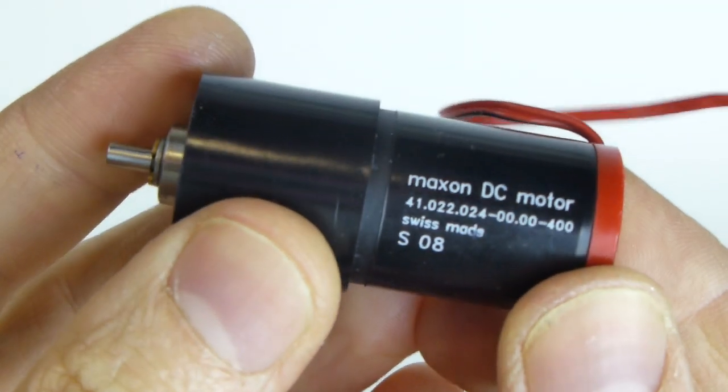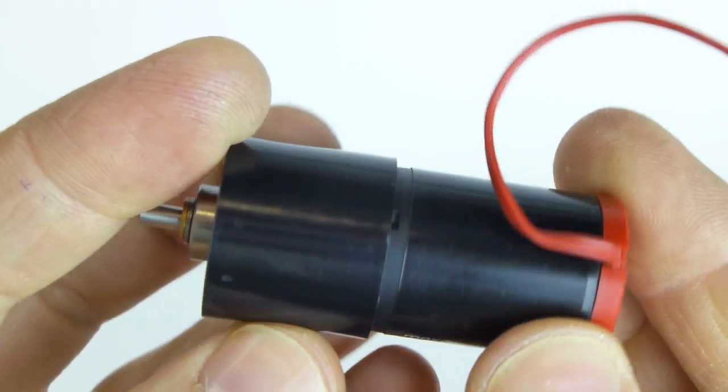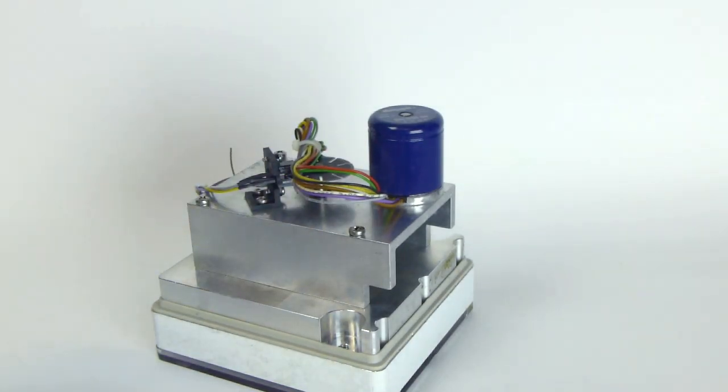I forget where this little motor came from, it might have been some kind of printer mechanism. Anyhow, the next job was to make some brackets to mount it. I decided to make these from a worn out peristaltic pump.